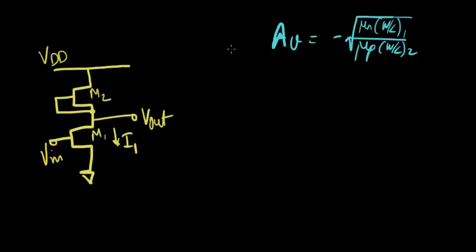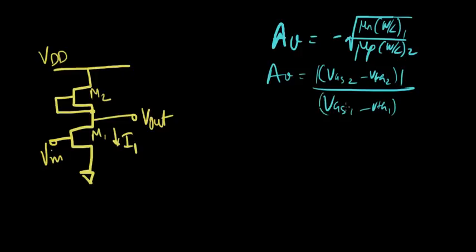We also had another form of equation for this gain: Av equals VGS2 minus VTH2, the mod of that, over VGS1 minus VTH1. And we did speak about if for example the gain is 10, the overdrive required for the second transistor would be 10 times the overdrive required for the first transistor, and that will kill your output swing.